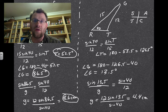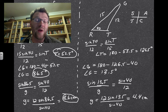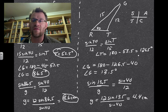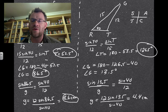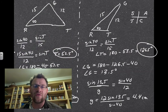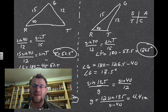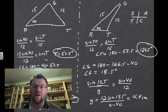If you have the ambiguous case, you might be able to make two triangles, and if so, you need to solve them both. The key thing to remember is that the first time you solve for that angle, you get an answer. The second time, you subtract that answer from 180 and then use the law of sines to continue.